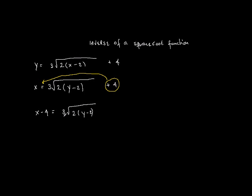And now I divide both sides by 3 to get rid of the 3 in front of my square root. I get x minus 4 over 3 equals the square root of 2y minus 2.